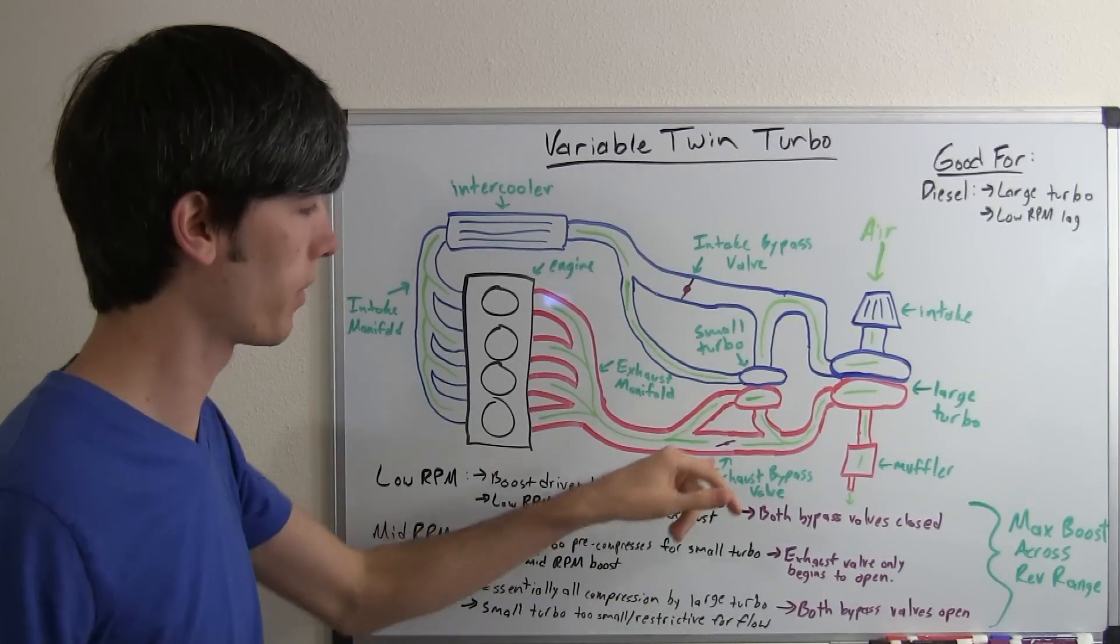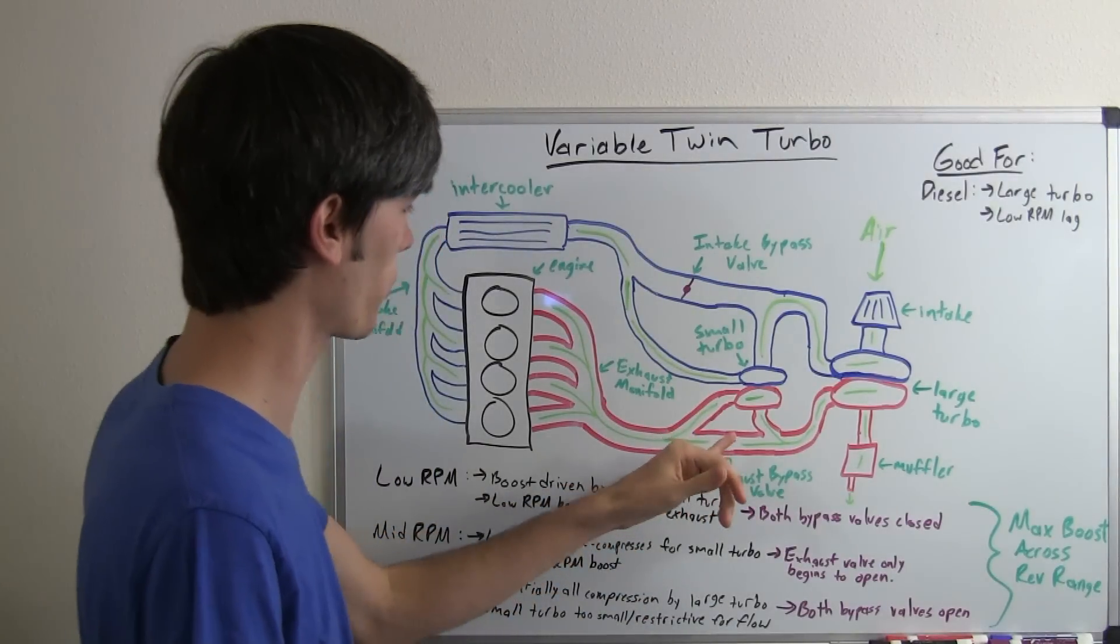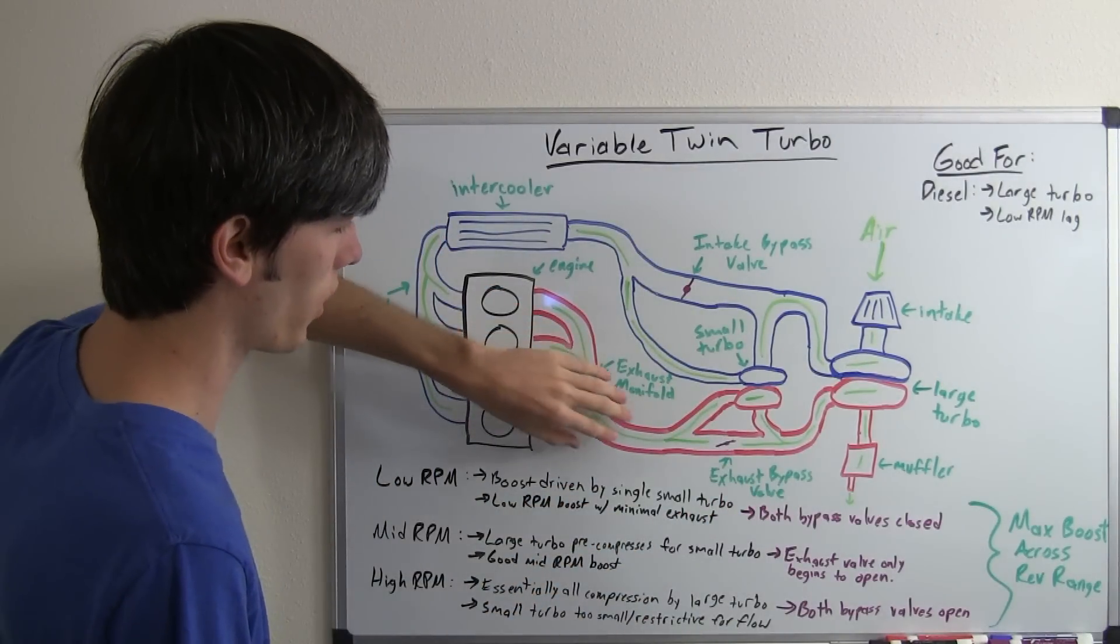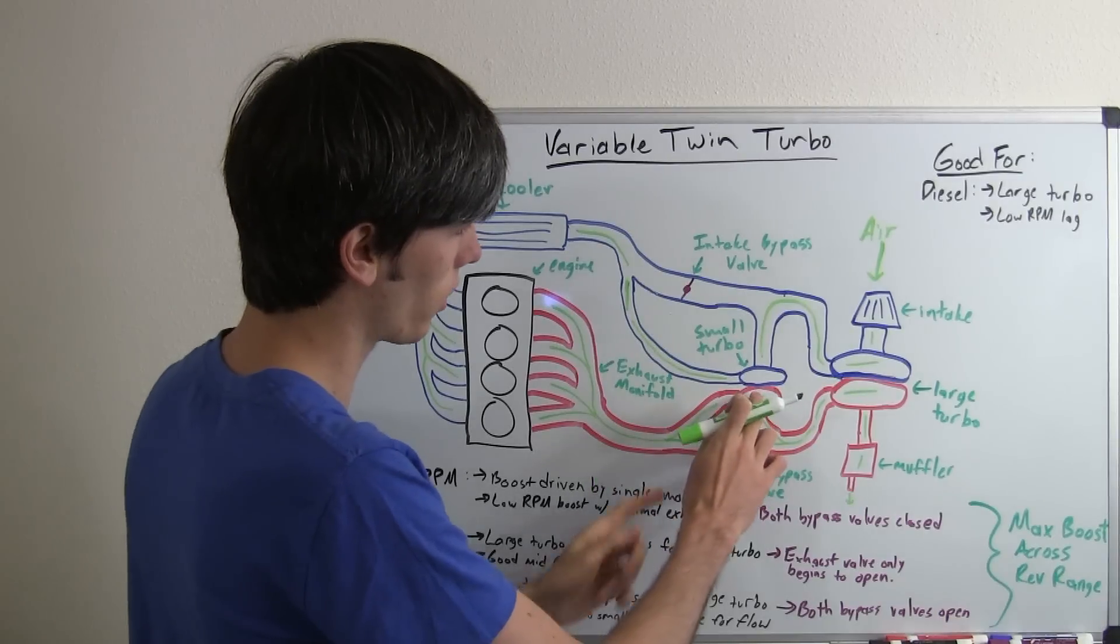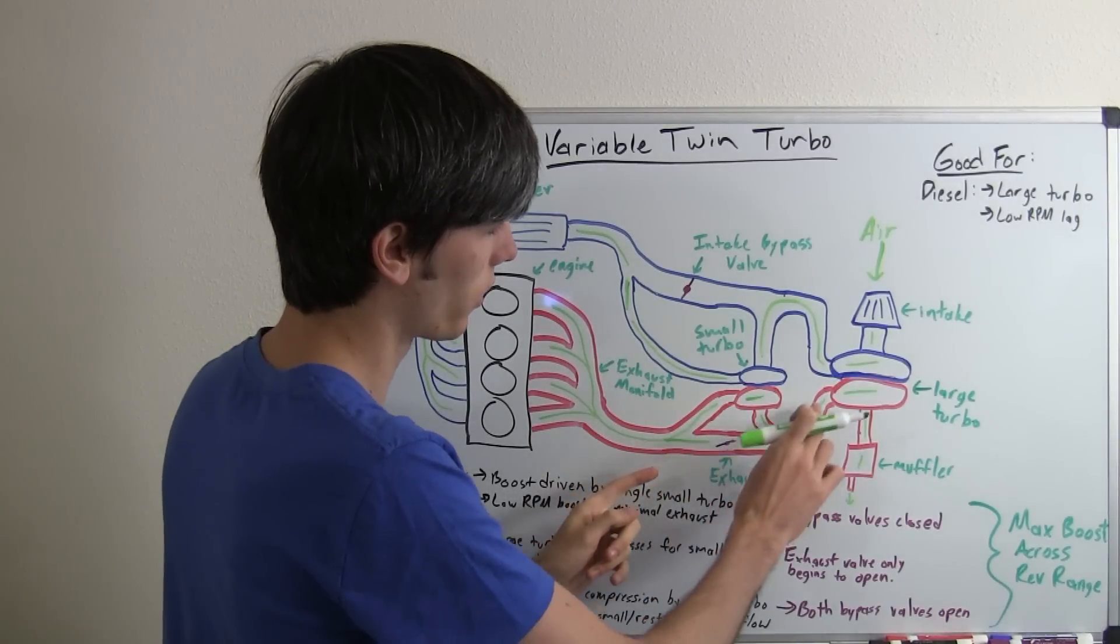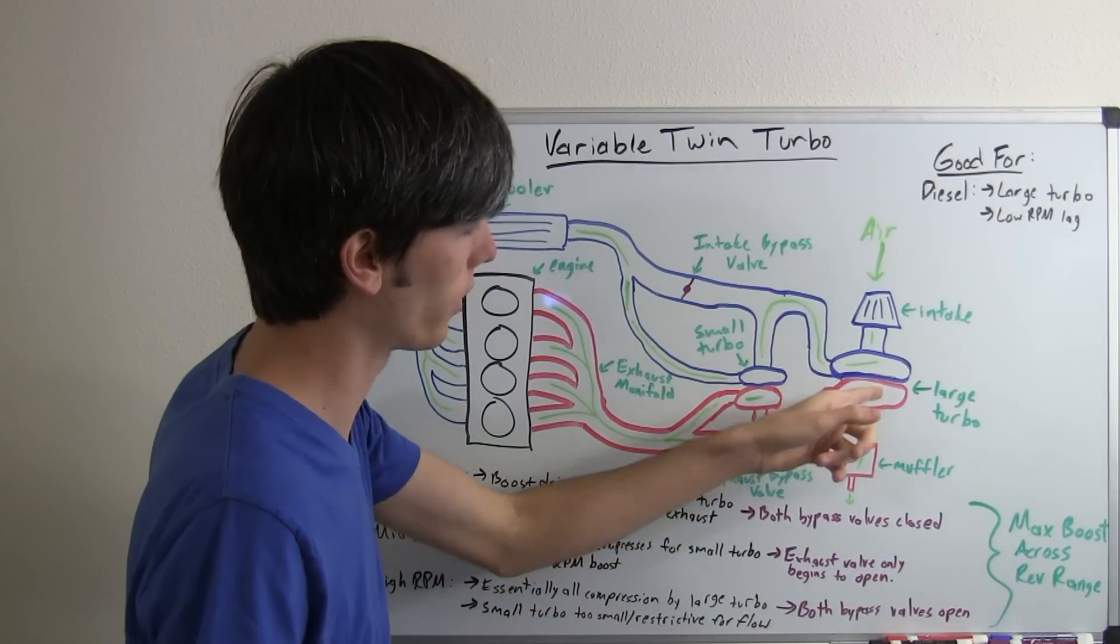At mid RPM this exhaust bypass valve is going to start to open. So what's going to happen is that exhaust gas, instead of all of it having to go through this turbo, some of it is going to start to pass and go through this larger turbo.